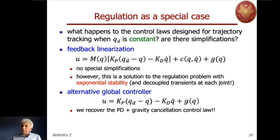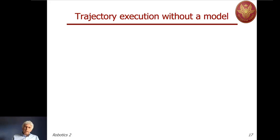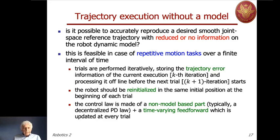What if we don't know much about the full model and still want good tracking of a time-varying trajectory? This leads to the second part of the lecture: trajectory execution without a model or with very poor model information. The question is: if we have very poor information on the robot dynamic model, can we accurately reproduce a sufficiently smooth joint-space reference trajectory? The answer is yes, but we require a special operative condition — namely that the motion is repetitive.